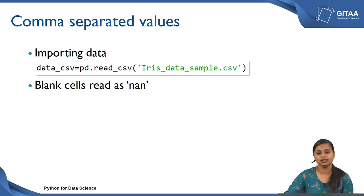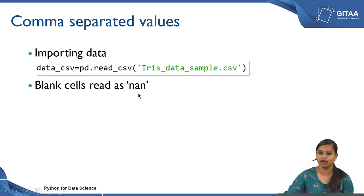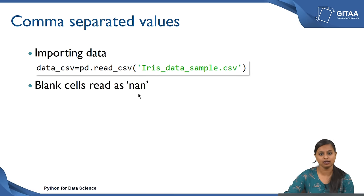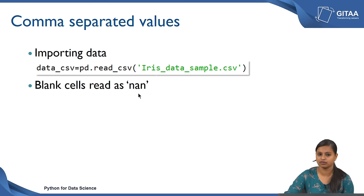Whenever you read any data into Spyder, all the blank cells will be read as NaN. There might be cases where you have some missing values in your data as blank values. In that case Python will default all the blank values to NaN, so whenever you use any function to describe how many missing values are in your record, the NaN will account for that.